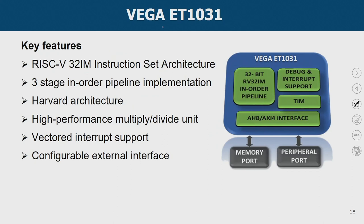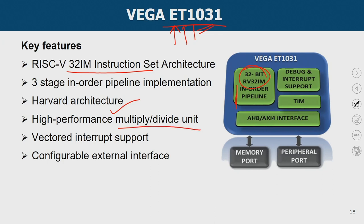Now let us look into the Vega ET series. As mentioned, it belongs to the embedded class — a 32-bit processor, single-core, 3-stage pipeline — supporting only the 32-bit IM instruction set, i.e., integer and multiplication operations. It does not have a floating-point unit. It uses the Harvard architecture, has a multiplication and division unit, supports vectored interrupts — where the interrupting device provides a number to help the processor identify which interrupt service routine to execute — and has a configurable external interface through which you can connect to memory and peripheral ports.